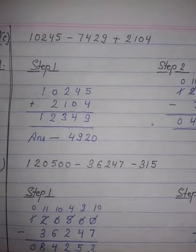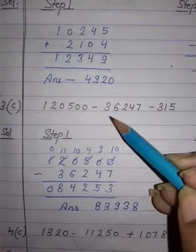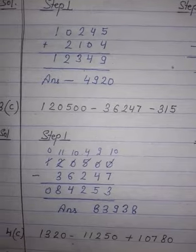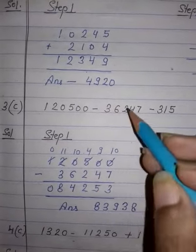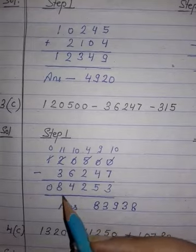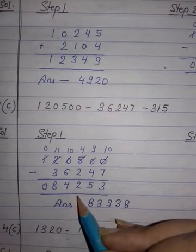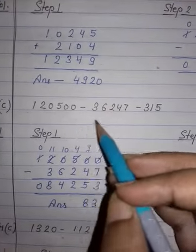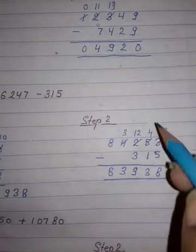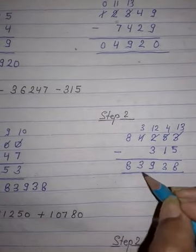See the next question: 1,20,500 minus 36,247 minus 350. Solve the question step wise. First of all, subtract 36,247 from 1,20,500. We have got 84,253. Now from the answer of step 1, subtract 350. You will get the final answer of your question, that is 83,938.